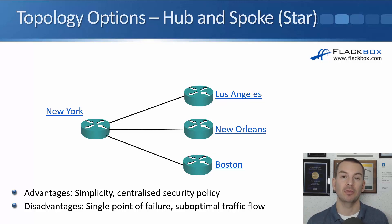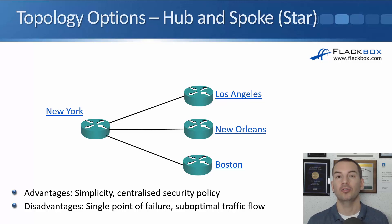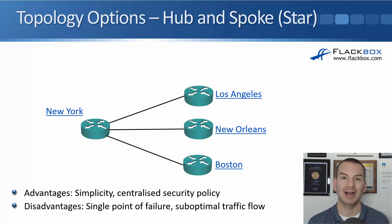The advantages of using a hub and spoke topology are that it's simple and you get simplified centralized security policy. Because all of the traffic going between your branches goes through New York, you can secure it in that central location. The disadvantages are there's a single point of failure — if we lose New York, we've lost connectivity between all of our offices. Also, it's suboptimal traffic flow: traffic from one branch to another is not going directly there, it's going through the hub site, which adds delay.